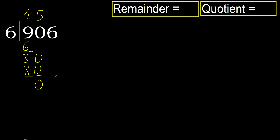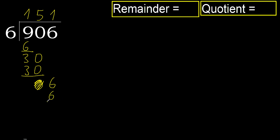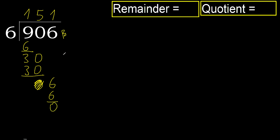Next: eliminate 0. 6 — 6 multiplied by 1 is 6, it is not greater, ok. Subtract. Next: there is no number, therefore finish it.